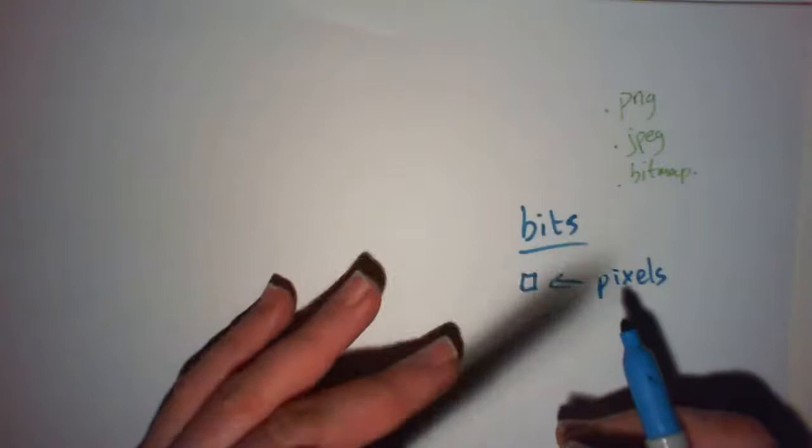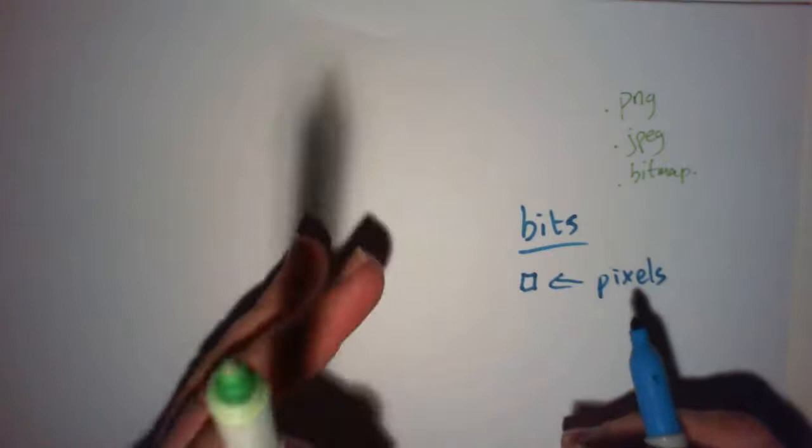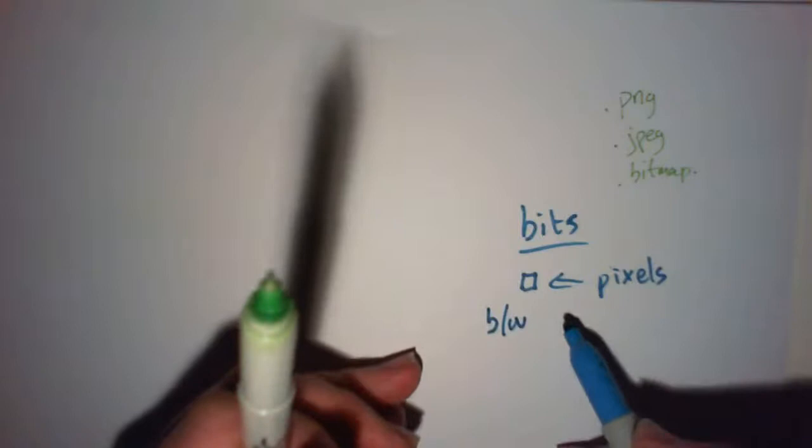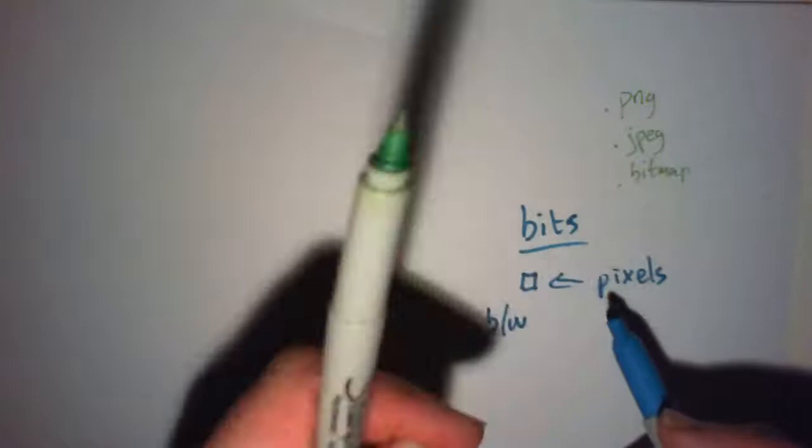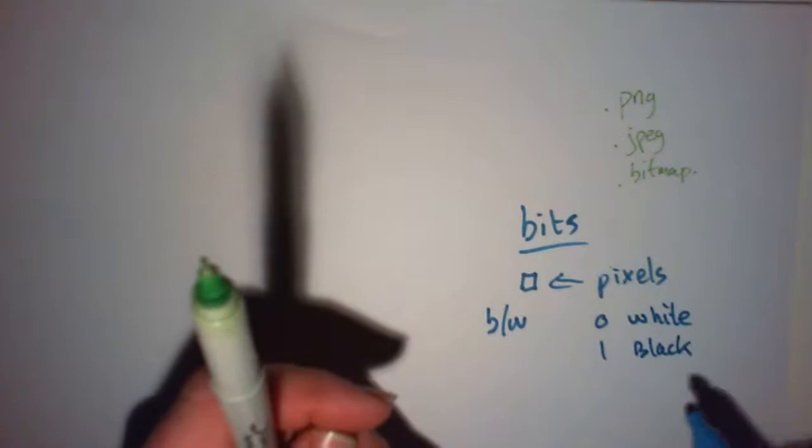The color of each pixel is represented by a binary code. The number of colors available is related to the number of bits that you're using. If it's black and white, there's only two colors, black or white, which means you only need one bit - zero for white or one for black.